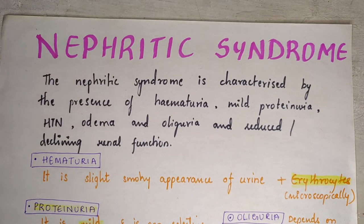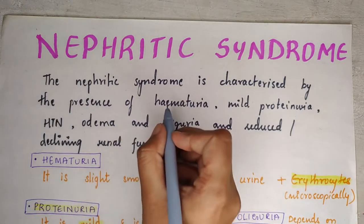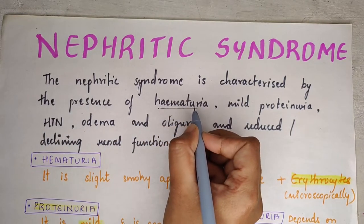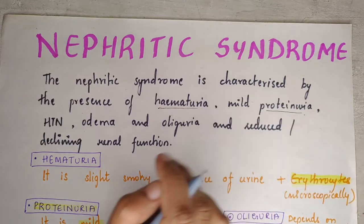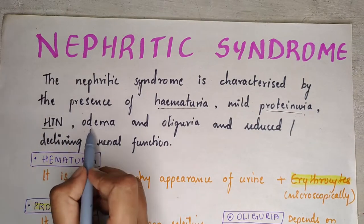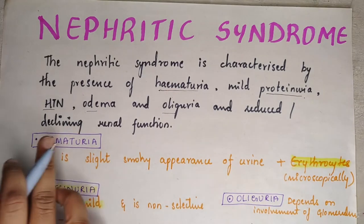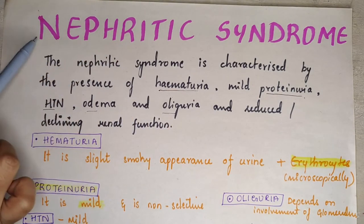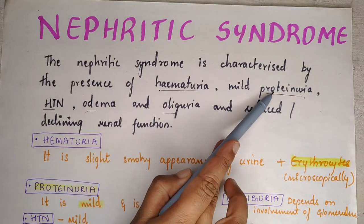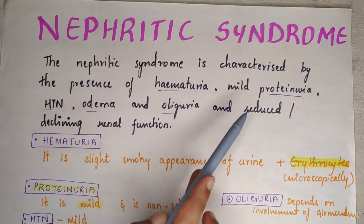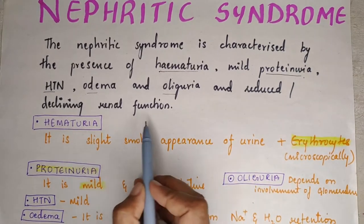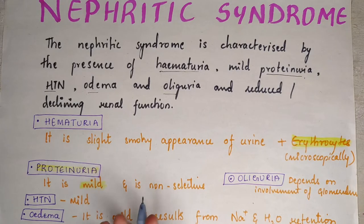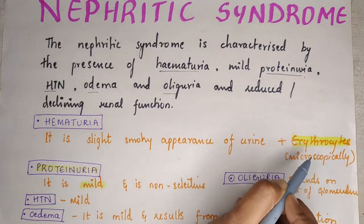Nephritic syndrome is characterized by hematuria — red blood cells in the urine — and mild proteinuria — protein in the urine — hypertension, edema, oliguria, and reduced or declining renal function. The urine has a slightly smoky appearance due to the presence of erythrocytes, which is usually detected microscopically.